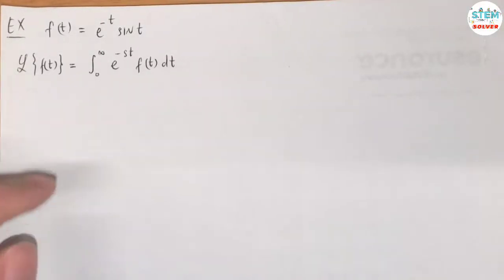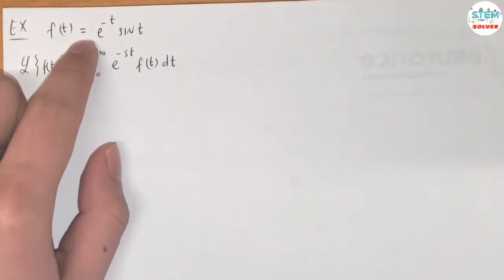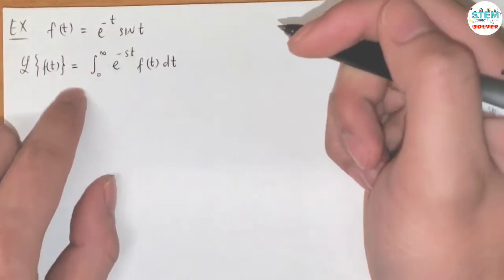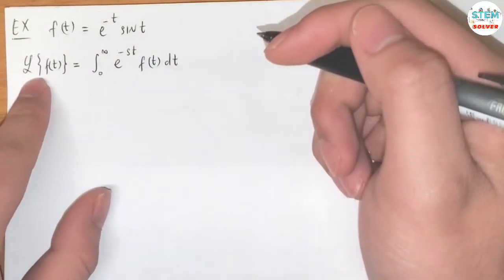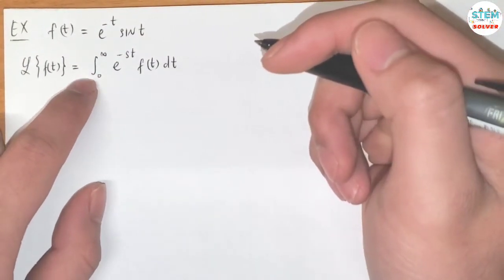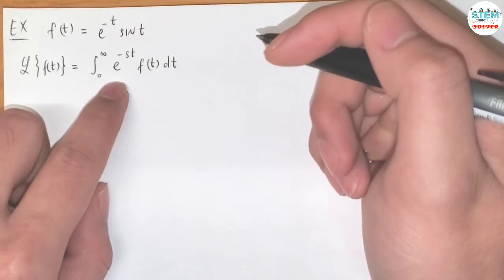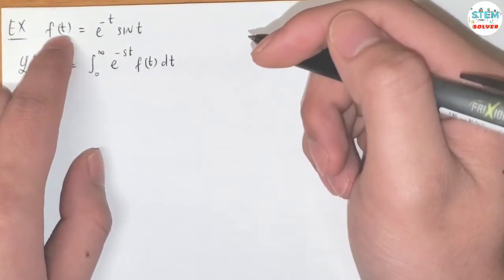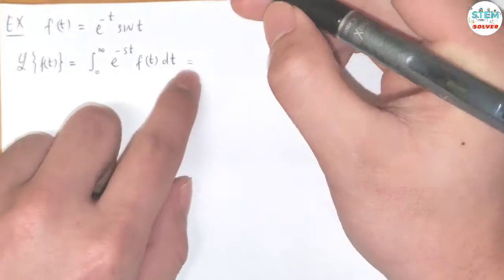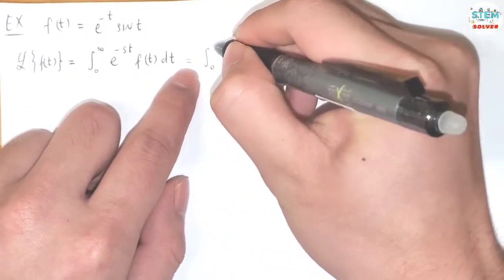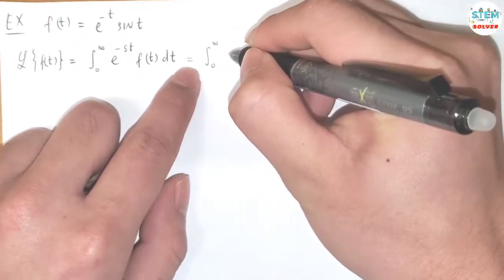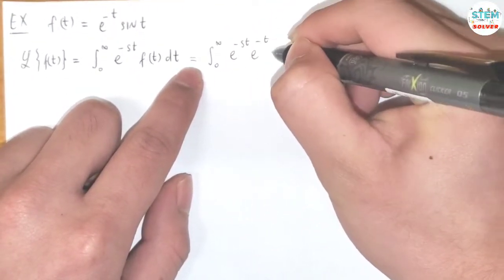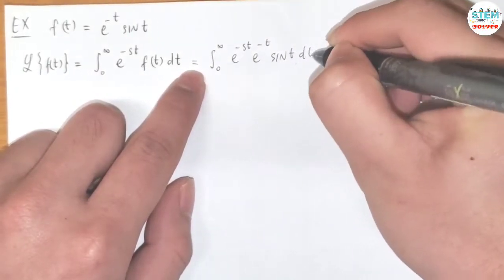Find the Laplace transform of f(t) = e^(-t)·sin(t). By the definition, the Laplace transform of f(t) is equal to the integral from zero to infinity of e^(-st)·f(t) dt. Plugging in f(t), we have the integral from zero to infinity of e^(-st)·e^(-t)·sin(t) dt.